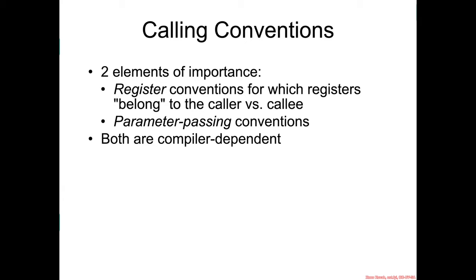There are two sub-elements of importance in a calling convention. The first are the register conventions about which registers belong to the caller versus the callee function. The second is the parameter passing conventions of how a caller passes parameters to a callee and how the callee passes a return value back. It's important to know that calling conventions are always compiler dependent, so unless a GCC compiler is specifically trying to abide by a calling convention to work with Microsoft code, they will frequently generate mutually incompatible code.